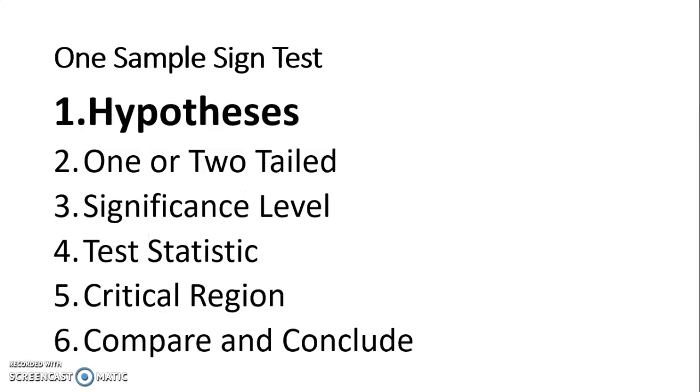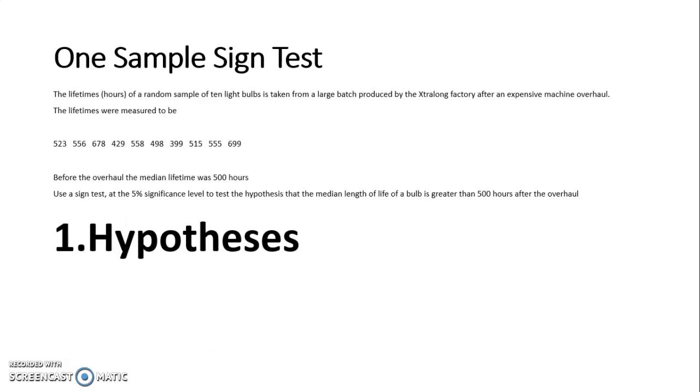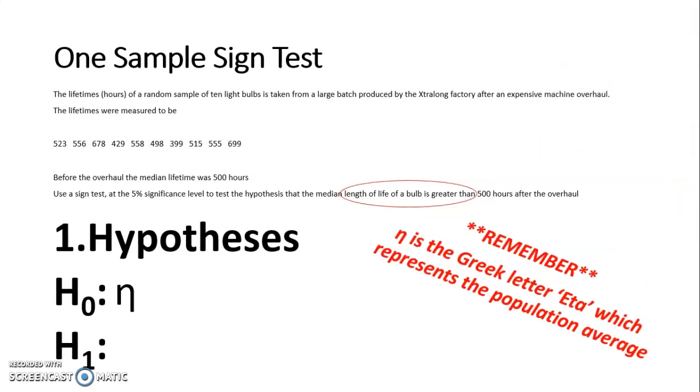Let's start with the hypotheses. With any hypothesis test, we need a null and an alternative hypothesis, H0 and H1. For a one-sample sign test, we are using eta. Eta is this Greek letter here, it's an N where the right-hand side is elongated, and it represents the population average. We can use mu for questions about the mean, but most of these questions will talk about average or median, so we're going to use eta just to be on the safe side.